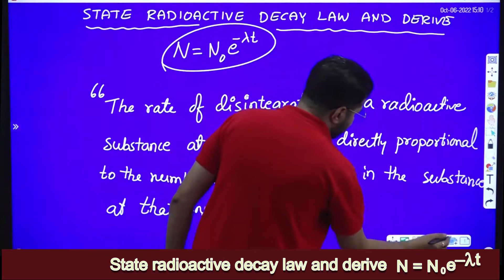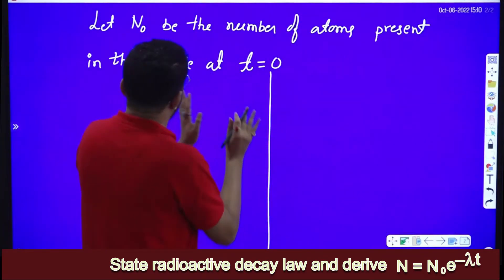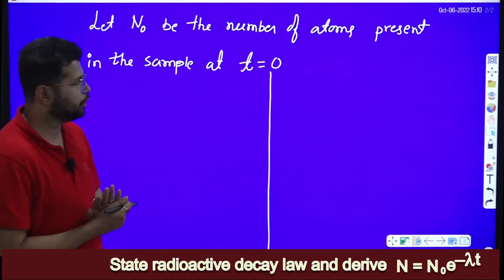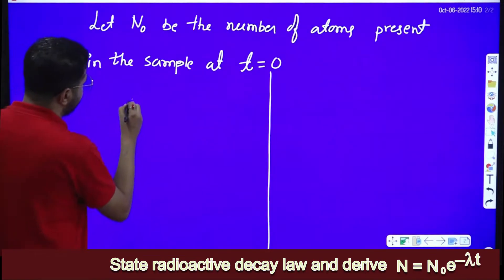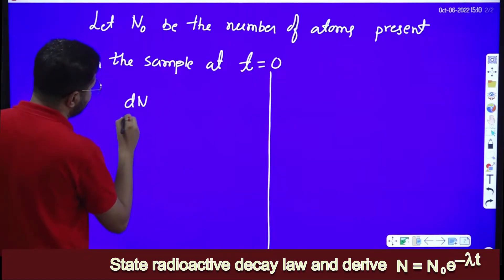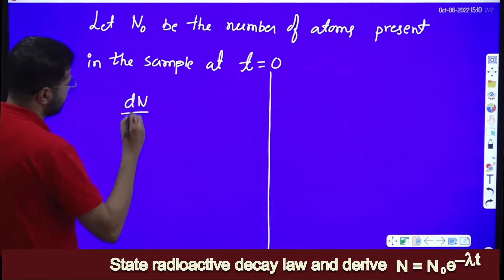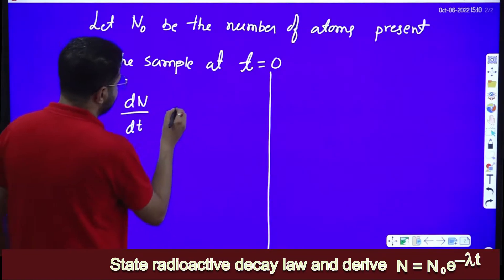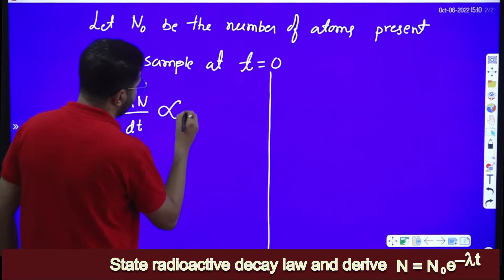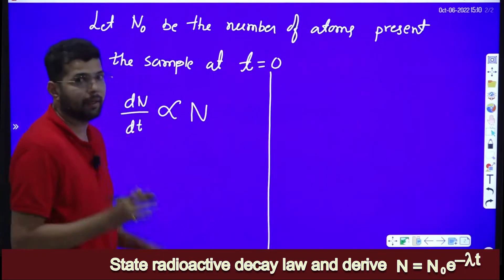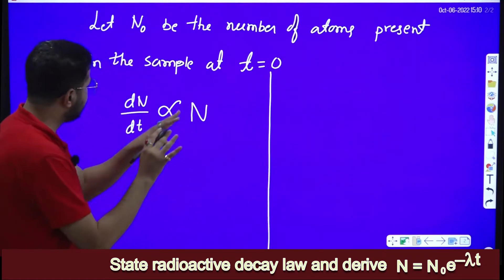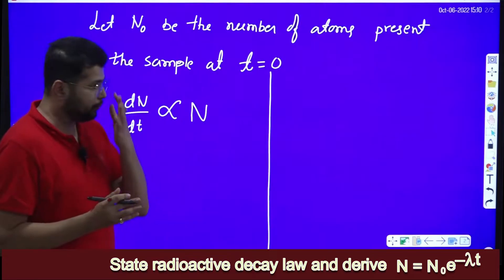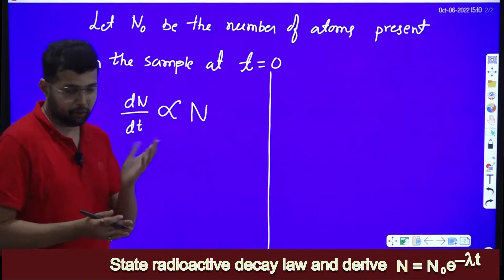Now we will do the derivation. Let N naught be the number of atoms present in the sample at t is equal to 0. Rate of disintegration, dN/dt, is directly proportional to the number of atoms present in the sample at that moment. So dN/dt is directly proportional to N. This is the mathematical form of radioactive decay law.